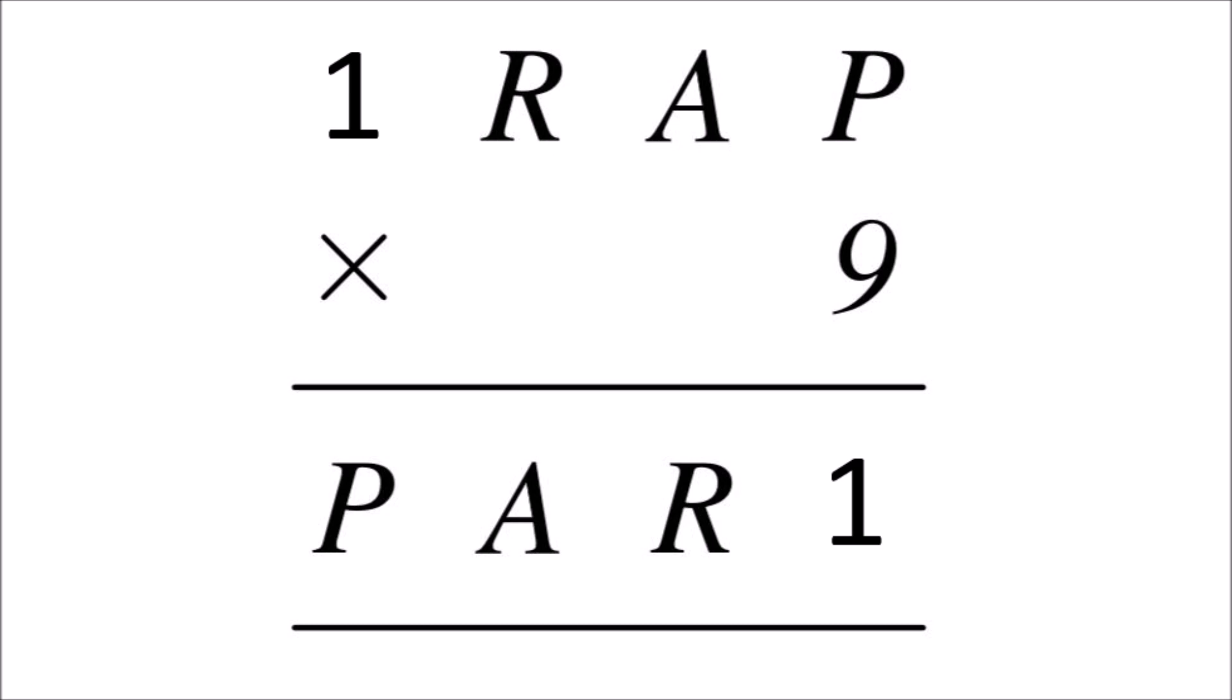Because T equals one, then P has to be nine times that, so P has to be nine. Because we know that T multiplied by nine gives P, and that T is one and P is nine, then that means that R multiplied by nine cannot give an answer that is two digits.